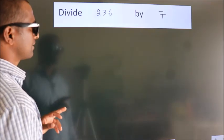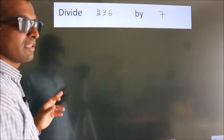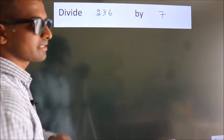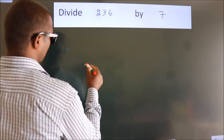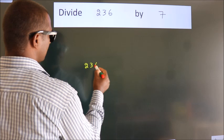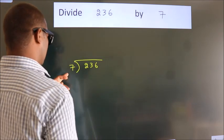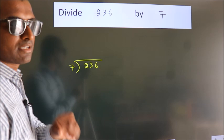Divide 236 by 7. To do this division, we should frame it in this way. 236 here, 7 here. This is your step 1.